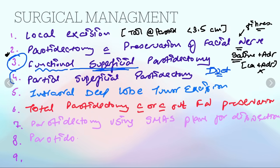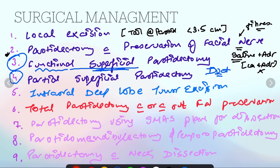For partial superficial parotidectomy, we will remove the partial superficial lobe, that is in partial dimensions. Fifth one is intraoral deep lobe tumor excision. Sixth option is total parotidectomy with or without facial nerve preservation.